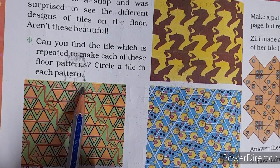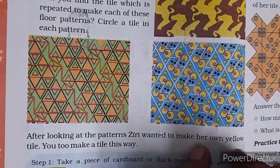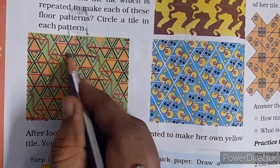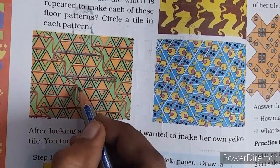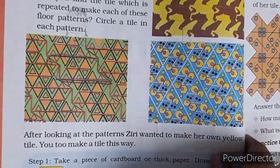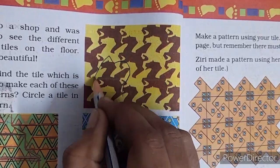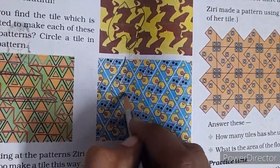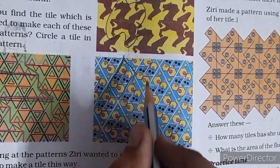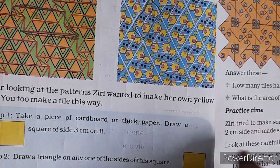Can you find the tile which is repeated to make each of this floor pattern? Circle a tile in each pattern. You need to tell which pattern is repeated here. So here this pattern is followed. Take one blank and it's repeated. This pattern is followed here and this one is repeated.